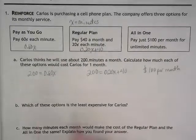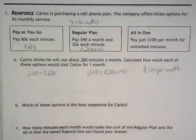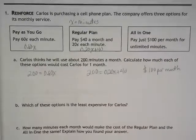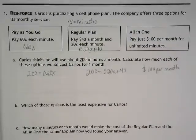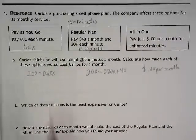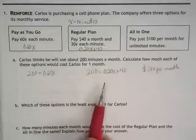So the question is, which of these three is a better deal? Go ahead at your table — have two people calculate the first one and two people calculate the second one.